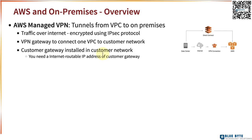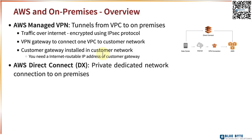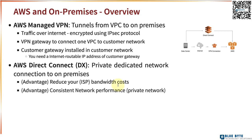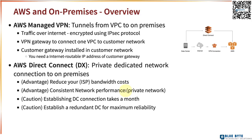If you don't want your traffic to go over the internet, you can go with AWS Direct Connect. It's a private dedicated network connection to on-premises. The great thing about Direct Connect is that it reduces your internet bandwidth costs, because this traffic does not go over the internet, and it also provides consistent network performance. However, a word of caution — establishing a Direct Connect connection takes a little while, typically about a month, and it is recommended to have a redundant Direct Connect connection for maximum reliability.